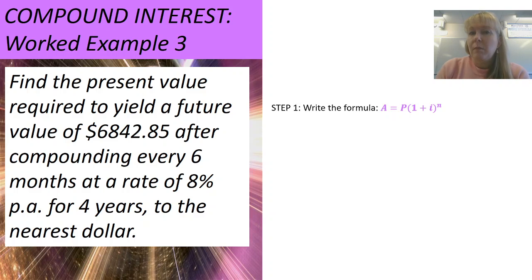Once again, step one, write the formula. Step two, state those variables. This time I know that A is 6842 and 85 cents. I'm going to convert my interest rate by, first of all, changing it to a decimal, 0.08. And then, because it's compounded every six months, that means it's compounded twice a year. So, I divide it by two. My value for i will be 0.04. n is going to be four years times two lots of six months in a year. That's going to be equal to eight. And now, I can simply substitute that into the formula and start solving.